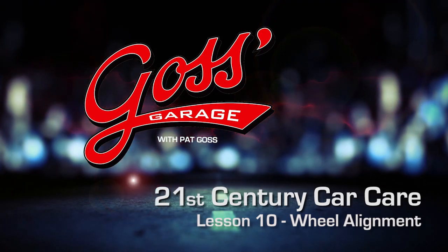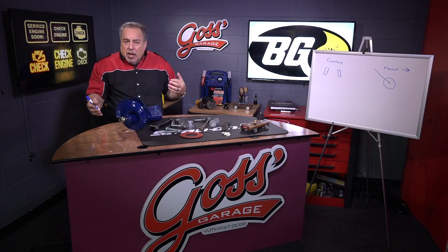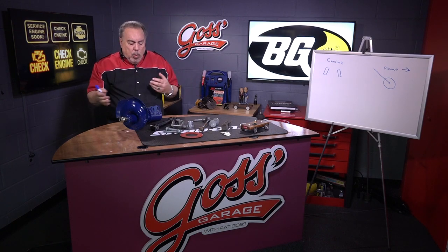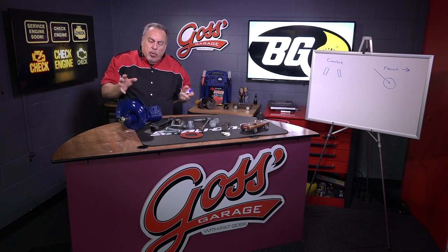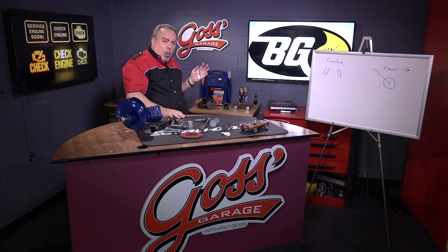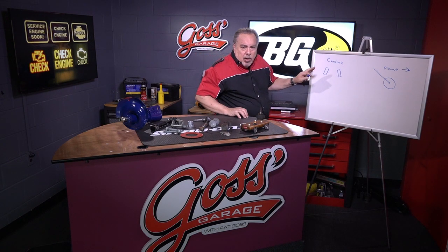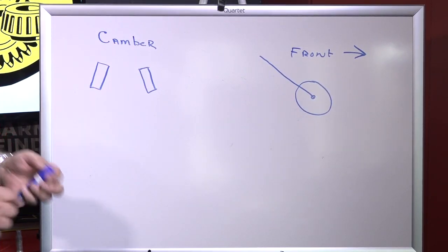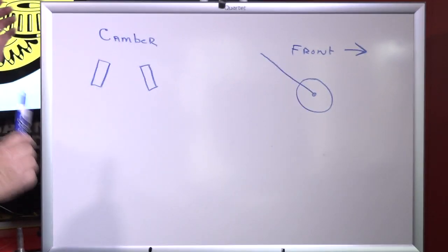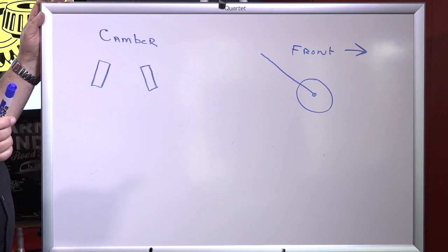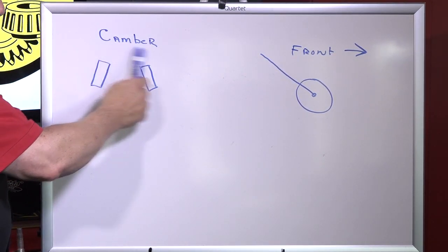Here in Goss's Garage we've been talking about front end alignments, specifically four-wheel or two-wheel alignments, thrust angle and stuff like that. In order to align a car you have to know what the different readings that the technician is going to take, what those readings mean. The most typical one we encounter when looking at front end alignment printouts is camber.